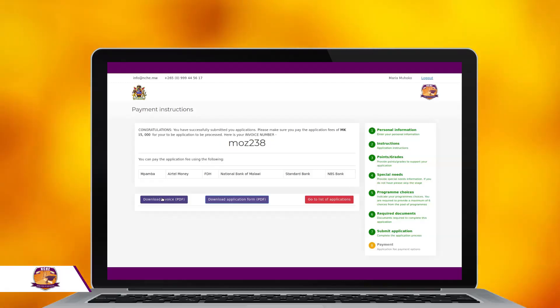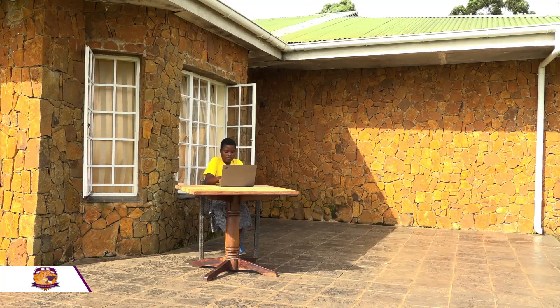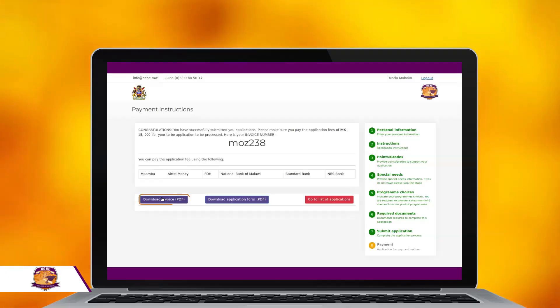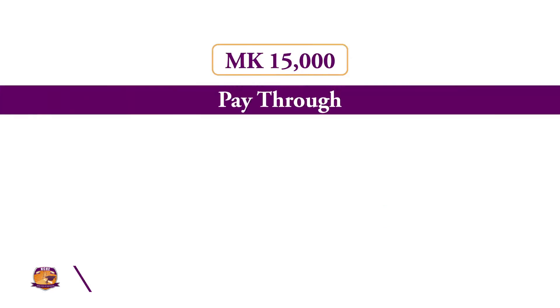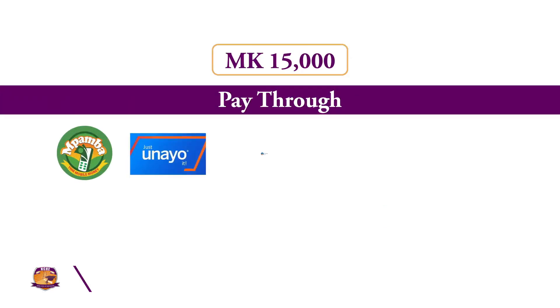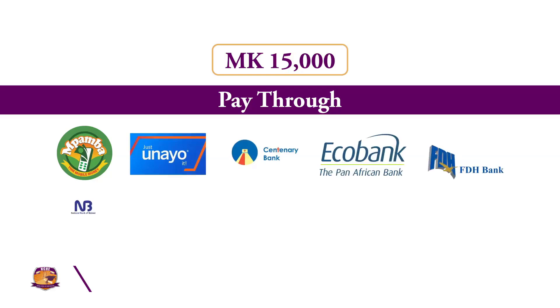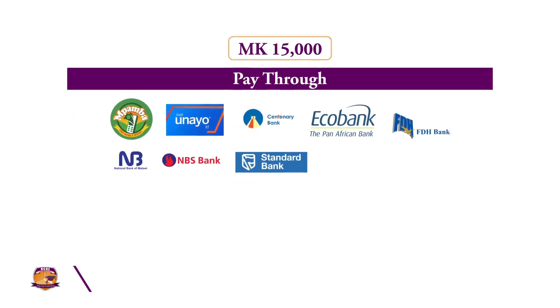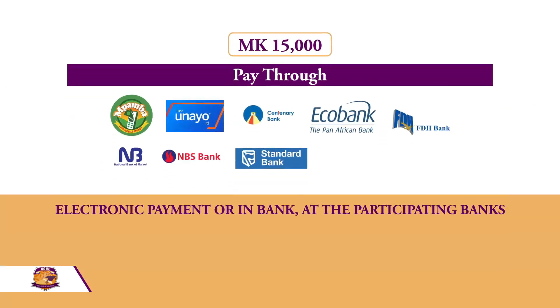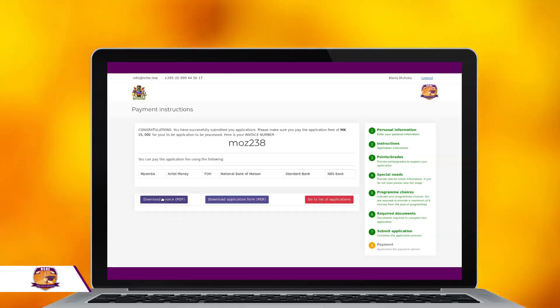After you confirm your submission, you will be taken to a page about payment instructions. Please take note of your invoice number because you will use it when making your payments. You can download the invoice by clicking on the Download Invoice button. You will be required to pay an application fee of 15,000 kwacha through TNM Mpamba, Unayo, Centenary Bank, ECO Bank, FDH Bank, National Bank of Malawi, NBS Bank, and Standard Bank. The payment can be made electronically or at the participating banks. You can also download a summary of your application by clicking on the Download Application Form button.